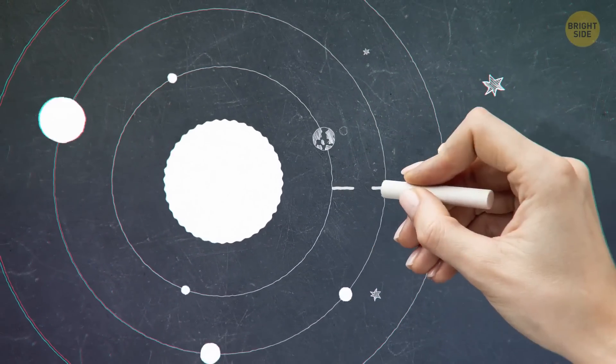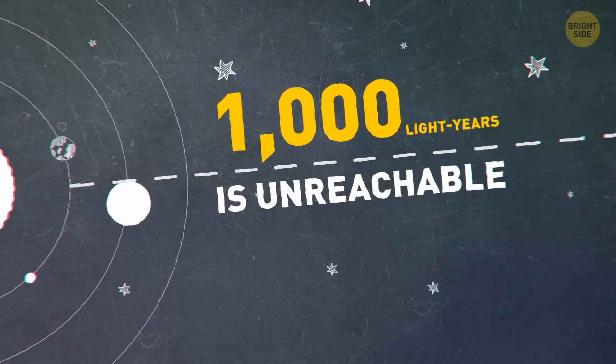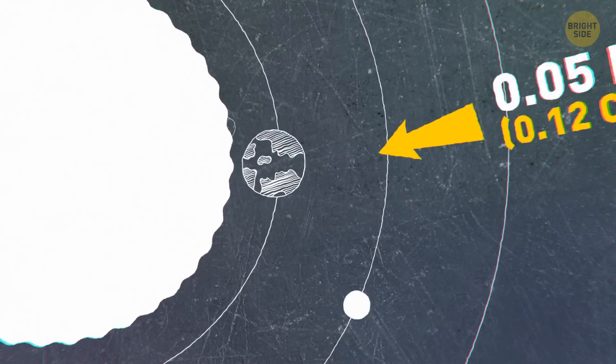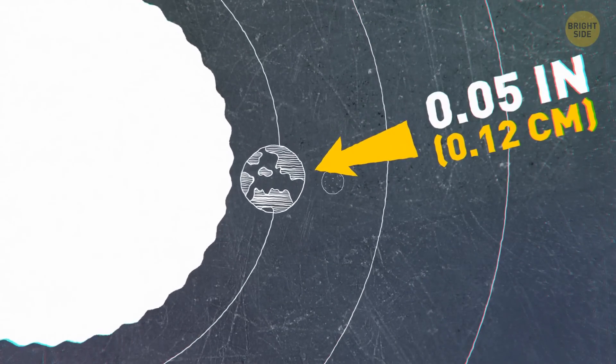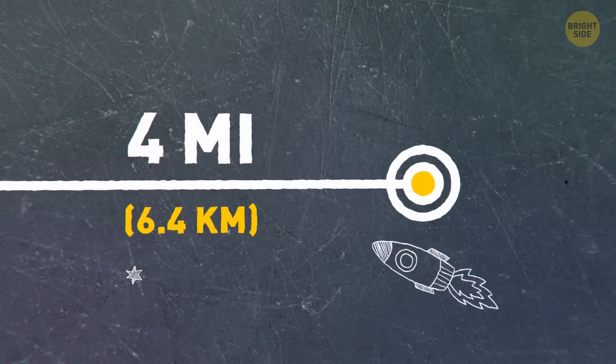But don't worry. For people, the distance of 1,000 light-years is unreachable. For example, if we were to make a model where the Earth's distance to the Sun was only 0.05 inches, you would have to travel about 4 miles to get to this black hole.